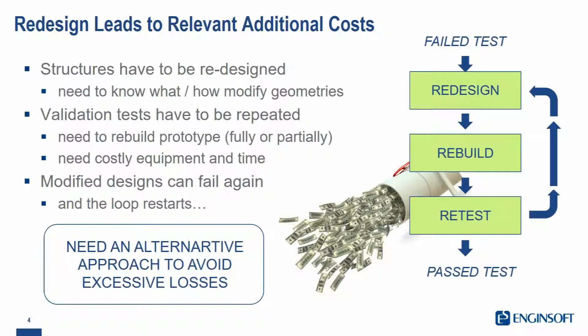If you find something wrong at the end, you have to redesign. Hopefully you can just adjust your physical prototype, but most of the time you have to replace parts and then repeat the test. The tests are a cost in themselves — you need expensive equipment, it takes time, and you're never sure that your adjustments will fix the situation. Maybe you need to redesign again and again. This loop has to be broken for Toyota, and that's why they considered applying multibody dynamic simulation upfront.